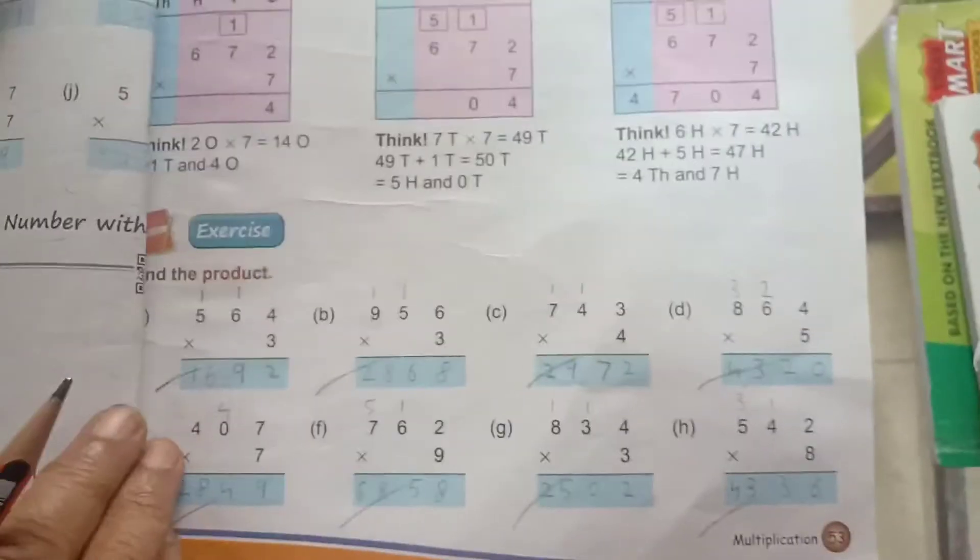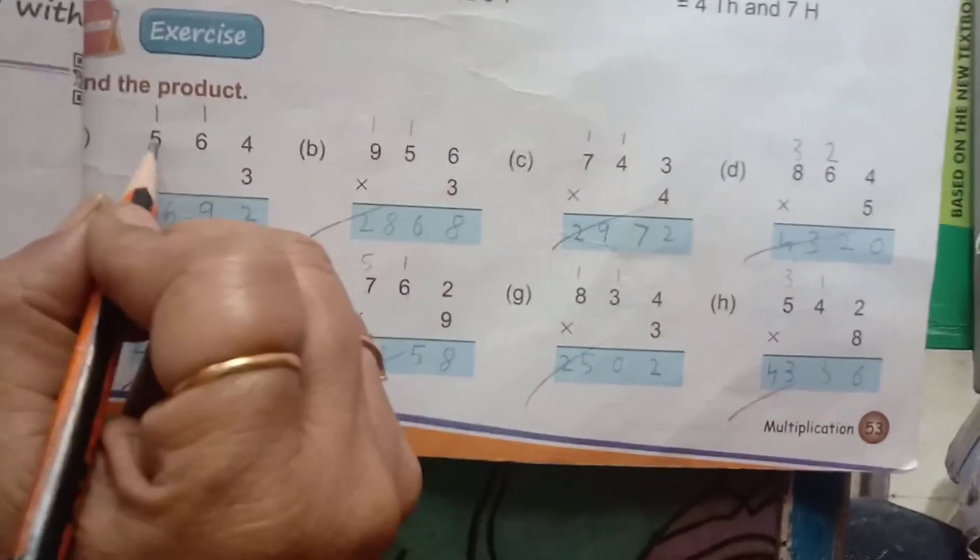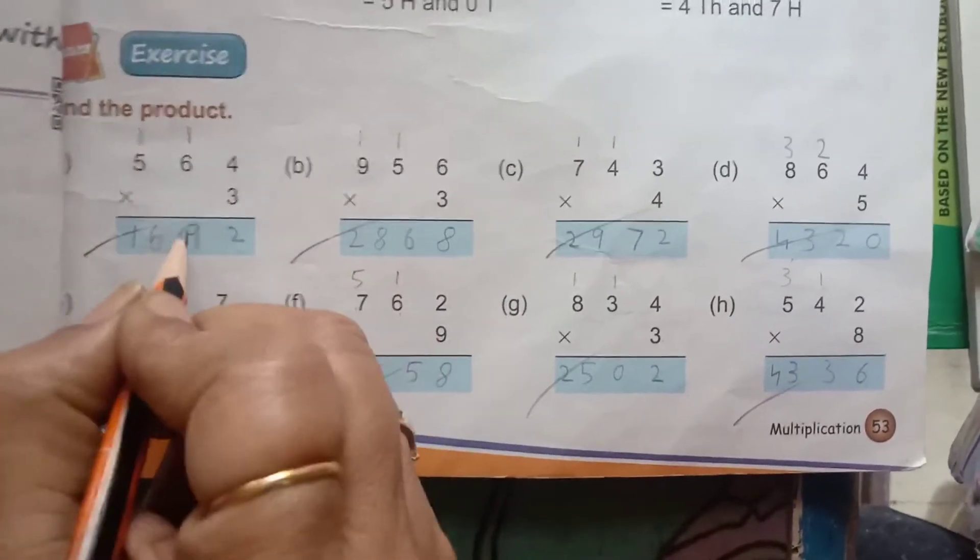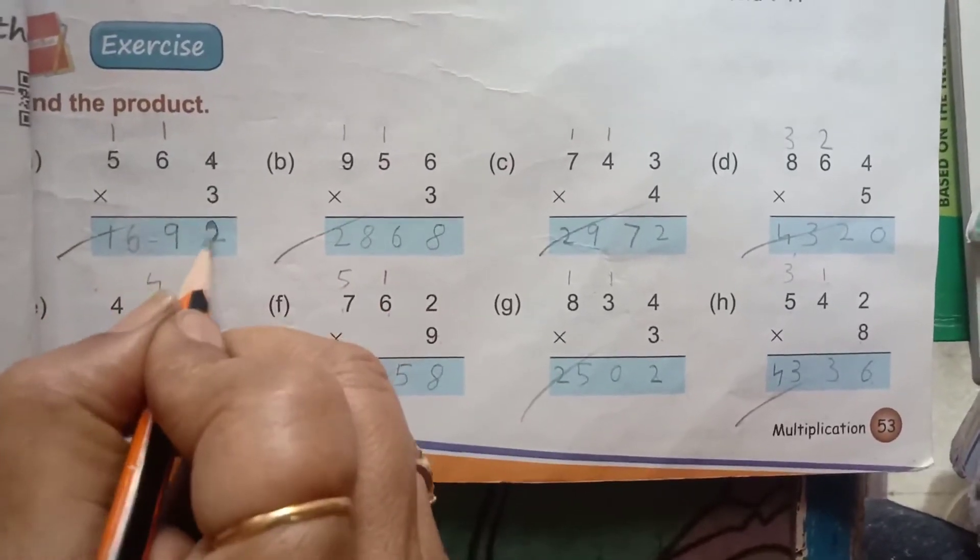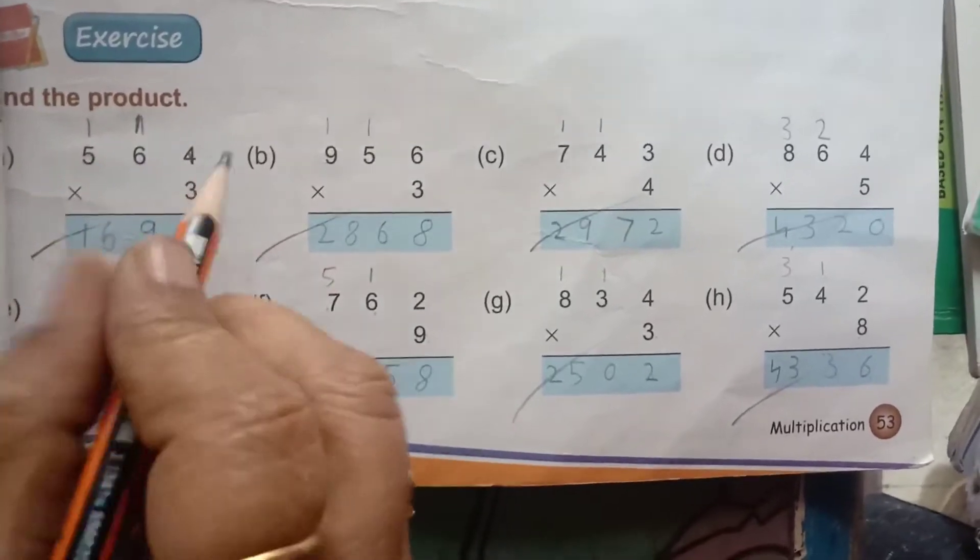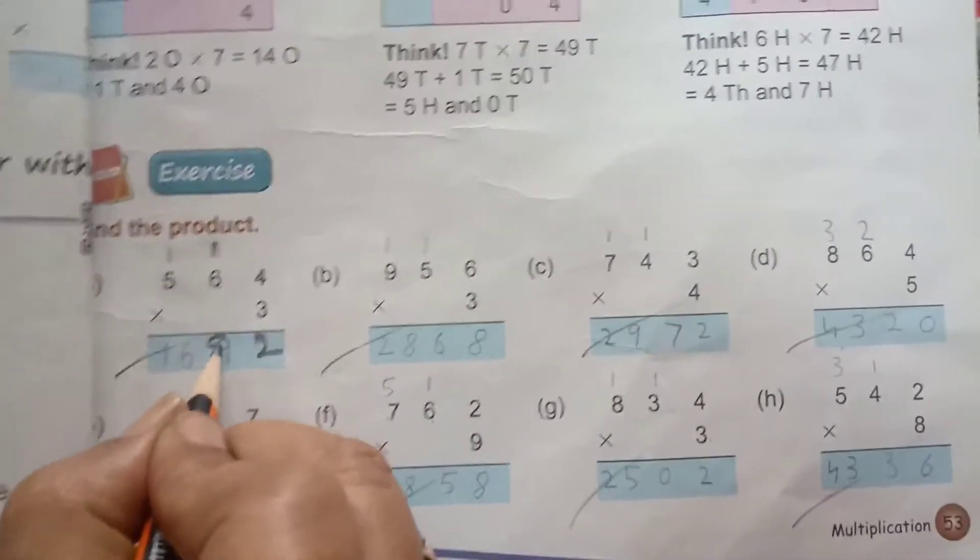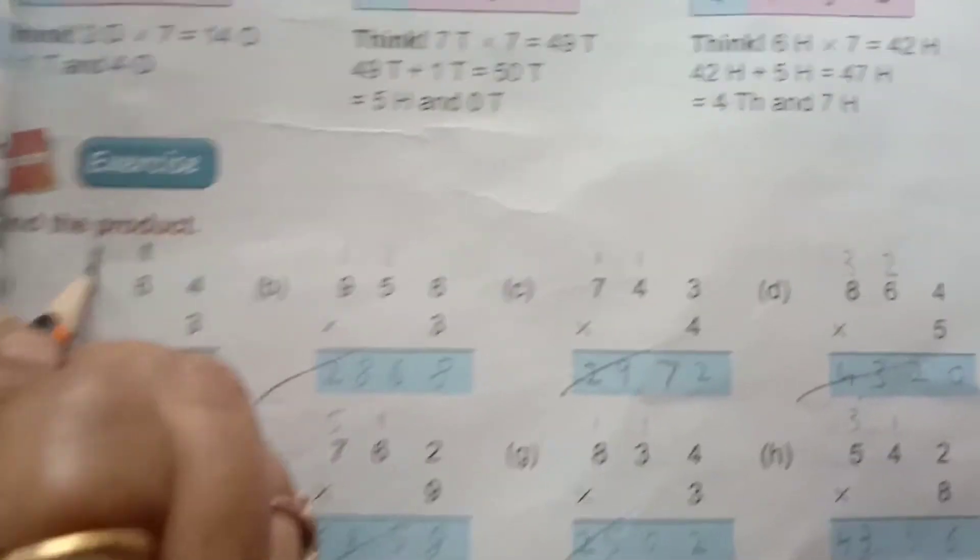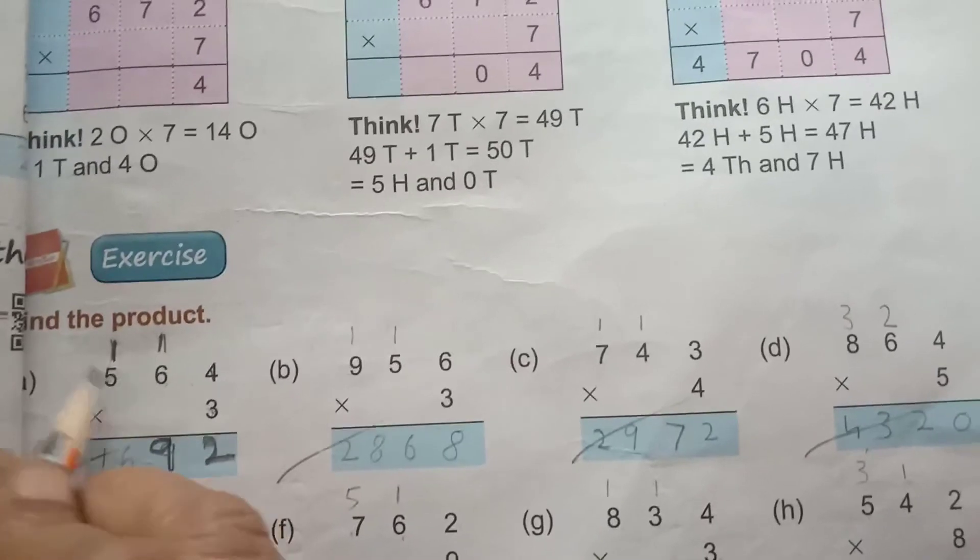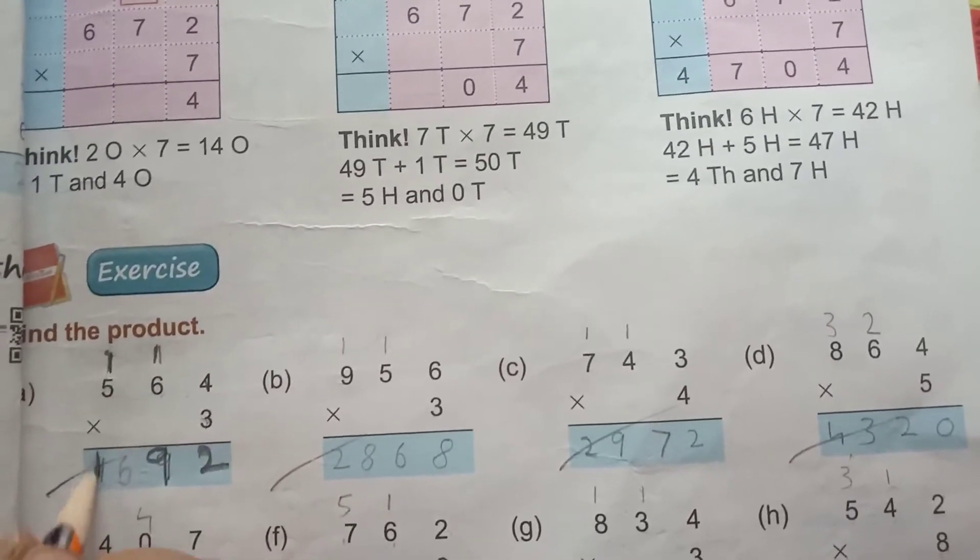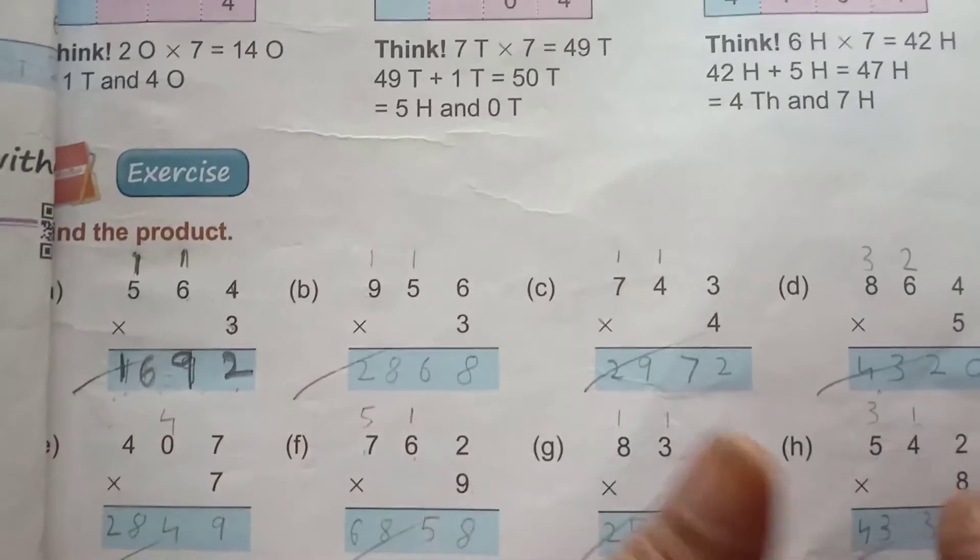Now, next one. These are the carry sums. Now see. 564 into 3. 3 fours are 12, 2 here, 1 carry here. 3 sixes are 18, 18 plus 1, 19. So 9 here, 1 carry here. 3 fives are 15, 15 plus 1, 16. So the answer is 1692.